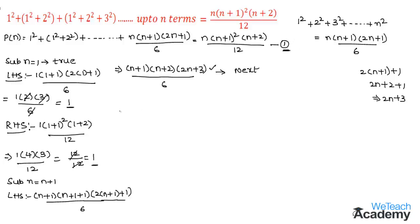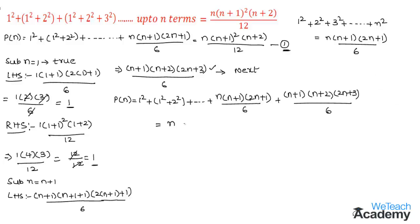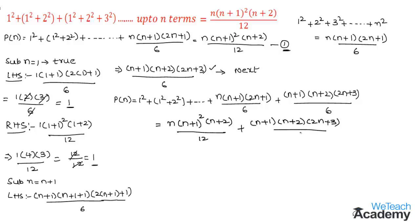By adding this next term to both sides of equation 1, we get: 1² + (1² + 2²) + ... + n(n+1)(2n+1)/6 + (n+1)(n+2)(2n+3)/6 = n(n+1)²(n+2)/12 + (n+1)(n+2)(2n+3)/6.